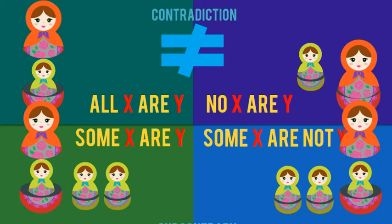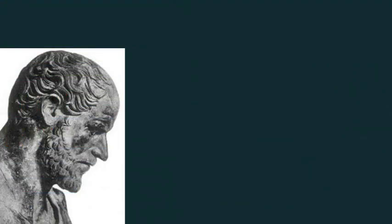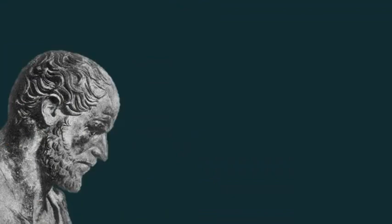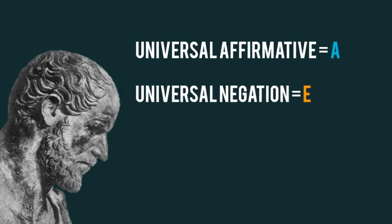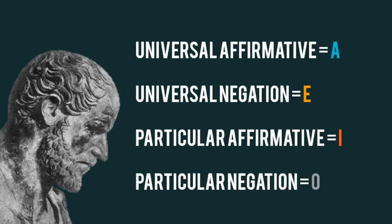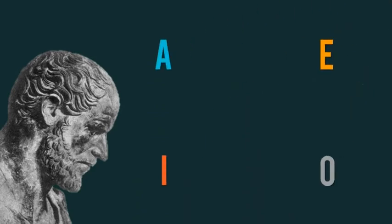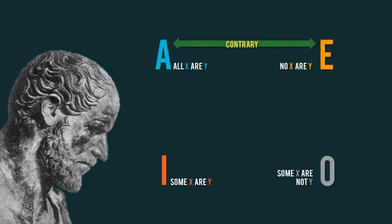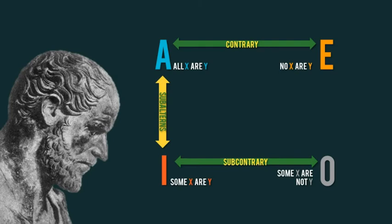The relationship between those last two statements is said to be subcontrary, because while they both could be true, they can't both be false. Now let's take all these statements and arrange them into a square, assigning a letter to each: A to universal affirmative, E to universal negation, I to particular affirmative, and O to particular negation. A and E are contrary; I and O are subcontrary. And I is said to be a subaltern of A, and O is said to be a subaltern of E, meaning that if A is true, then I must be true as well, and if E is true, then O must be true as well.